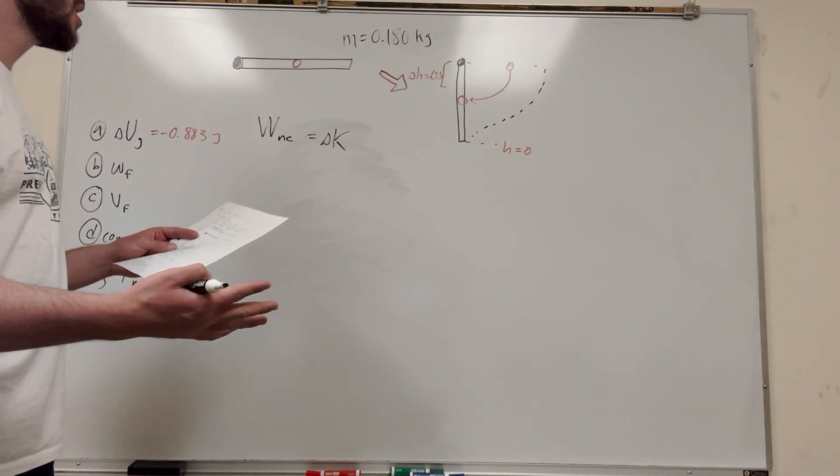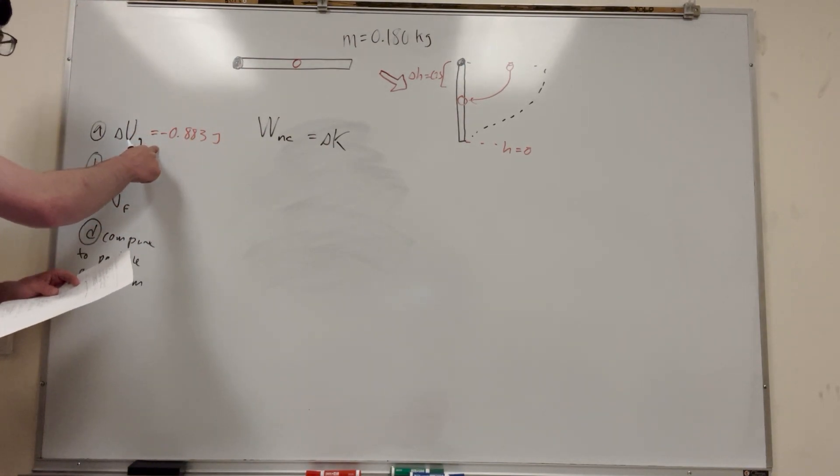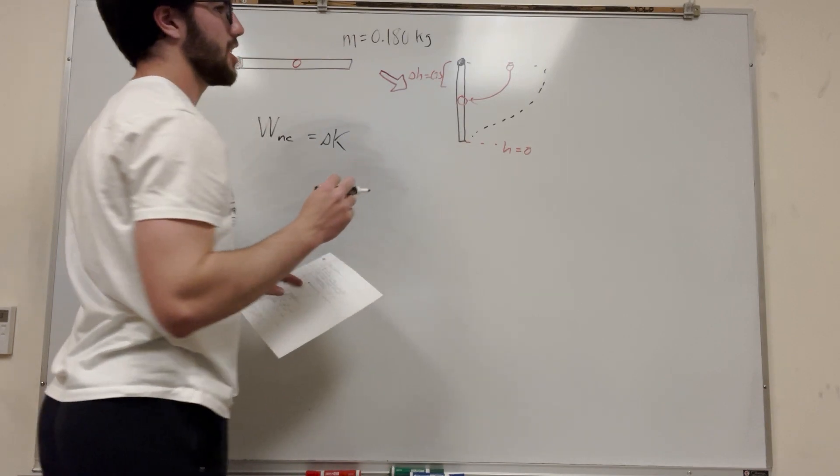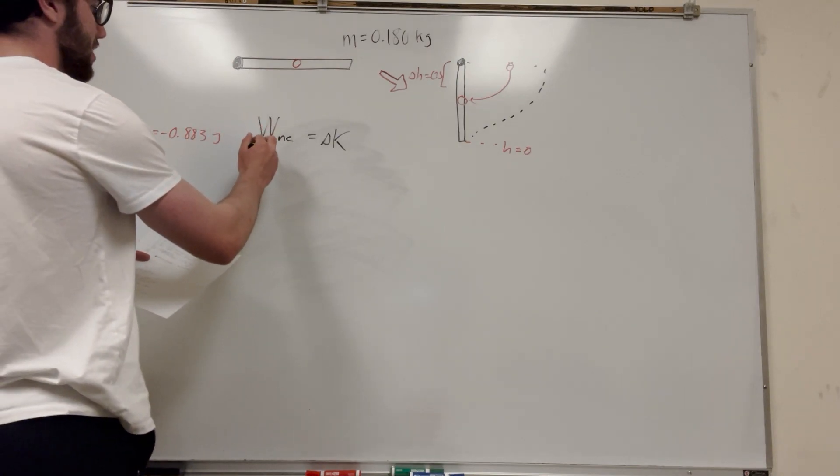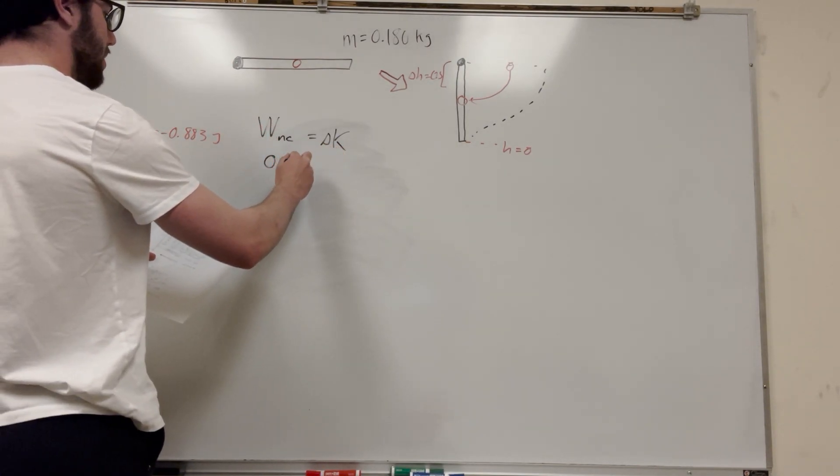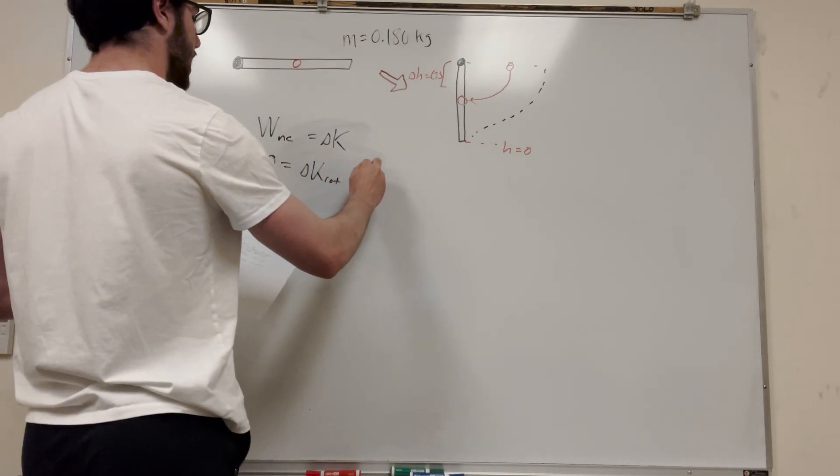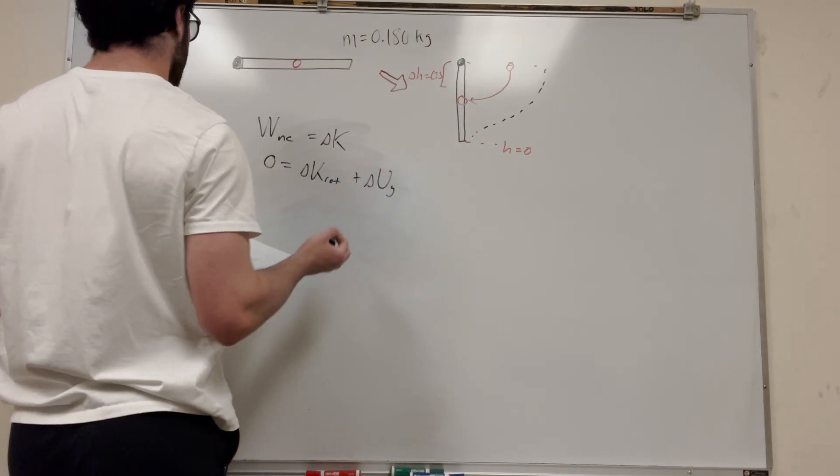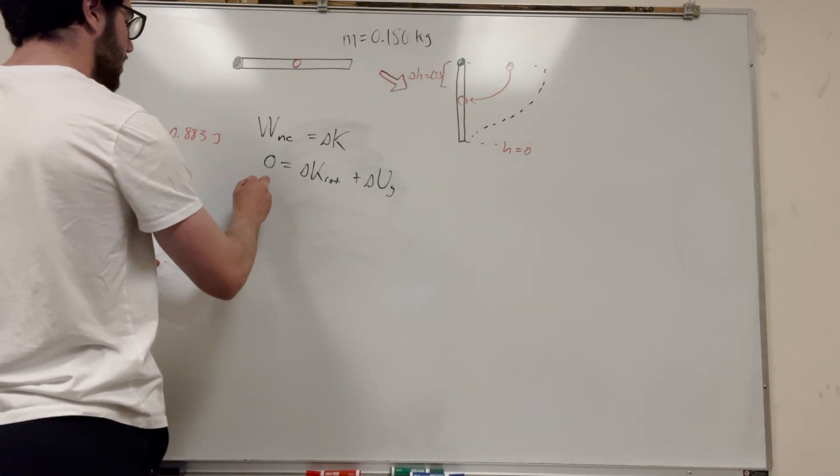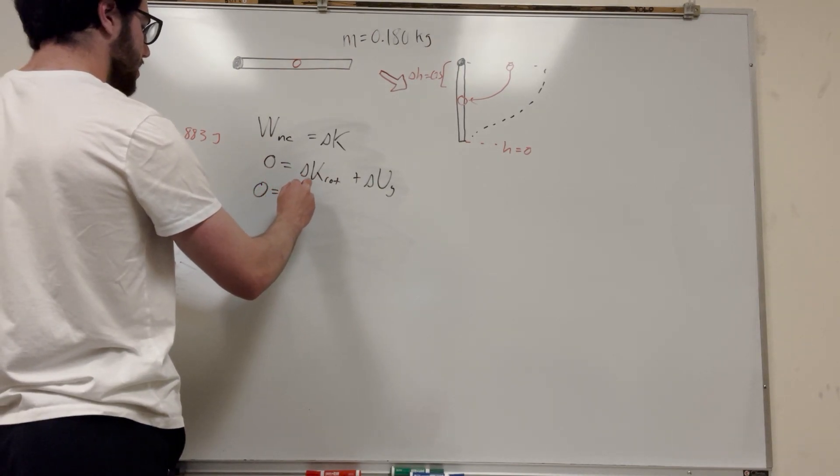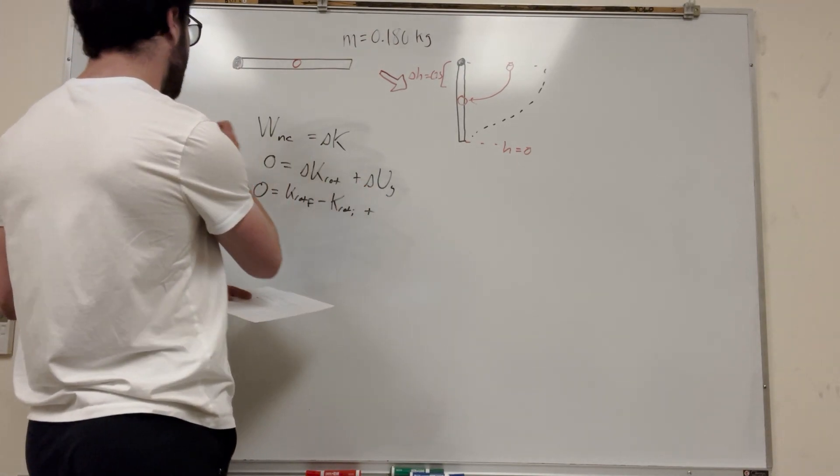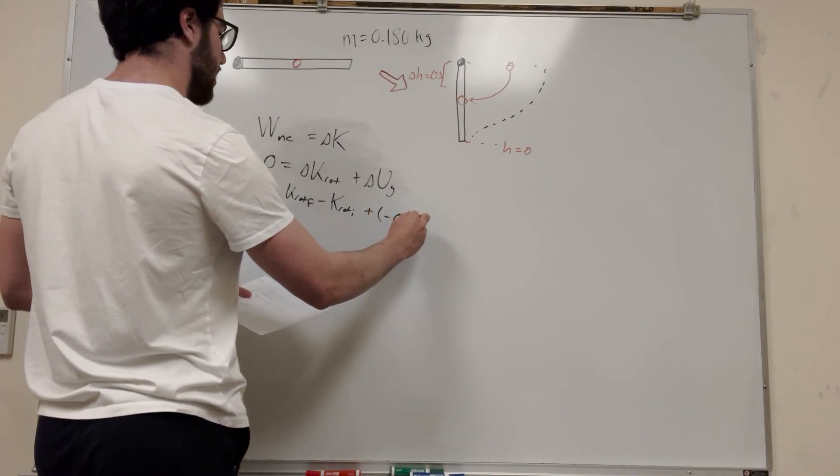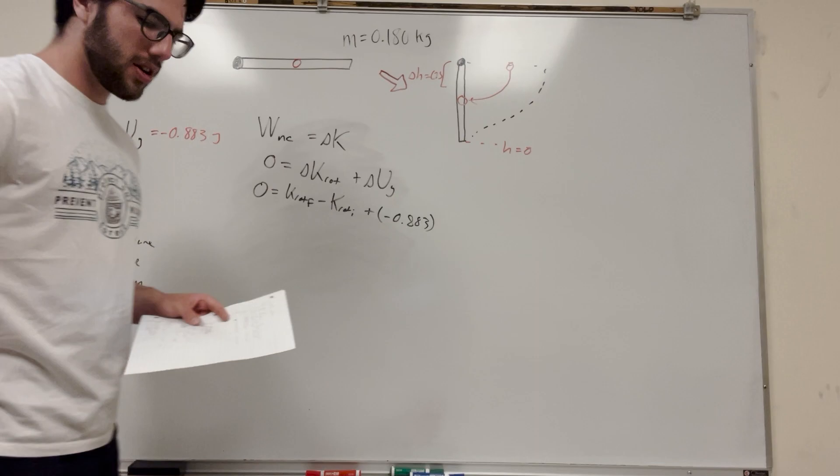There's going to be a lot of energies. So let's think about what energy is happening on the system. Well, the system is going to have rotational energy, but it's also going to have gravitational energy. So let's write that out. So we said that this is equal to zero. So it's going to be delta K rotational, and then plus change in gravitational potential energy. So let's expand this out some more. So this is K rotational final minus K rotational initially. That's what delta K is. And then plus, we have this number, right? This is negative 0.883.